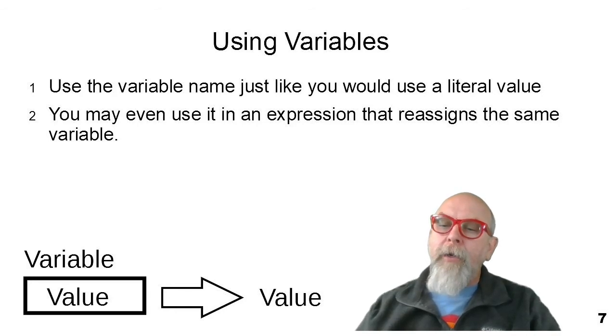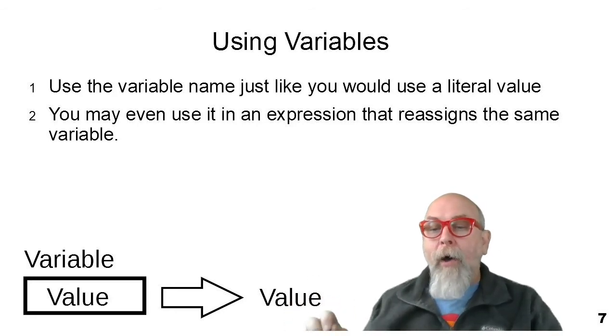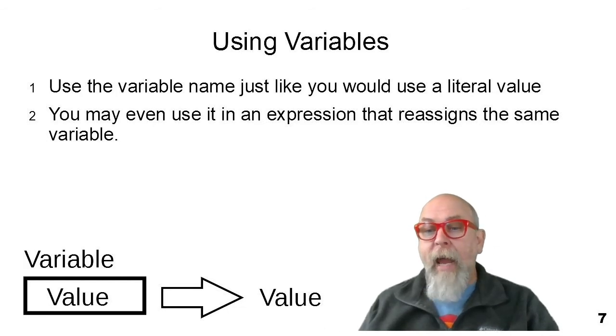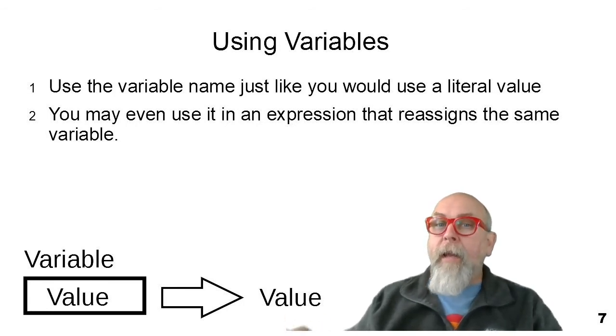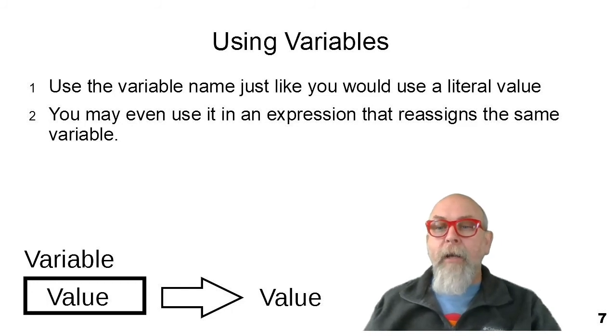In Python, to get the value out of a variable, all you have to do is use the variable's name anywhere in your program that you would put a literal value or any other kind of value. You just put the variable name in the expression, in the print statement, in the mathematical expression, anywhere, and it will then get the value from the variable that's in the variable at that moment and use it in the expression. Let's see what that looks like.